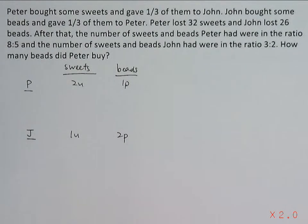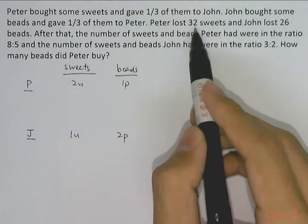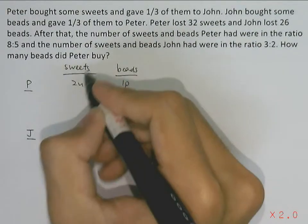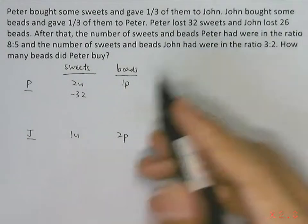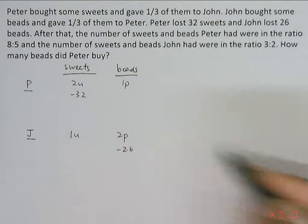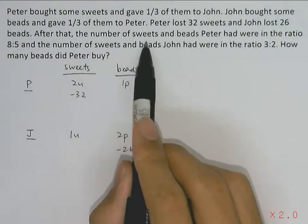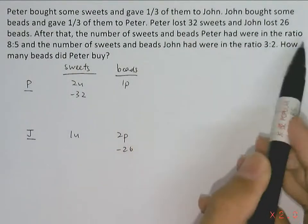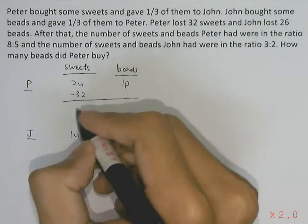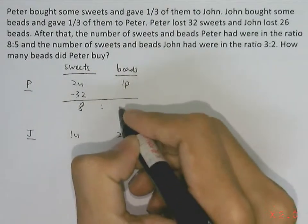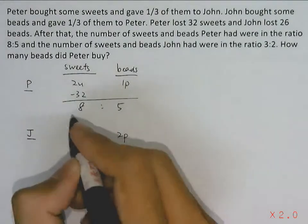Moving on: Peter lost 32 sweets, and John lost 26 beads. After that, the number of sweets and beads Peter had were in the ratio of 8 to 5. At this point we can apply cross multiplication.